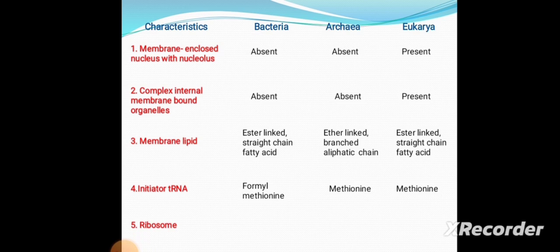Fifth is the ribosome. In Bacteria it is the 70S type; in Archaea it is also 70S type; but in Eukaryotes it is the 80S type. So the ribosome is similar — 70S — in both Bacteria and Archaea, but 80S in Eukaryotes.